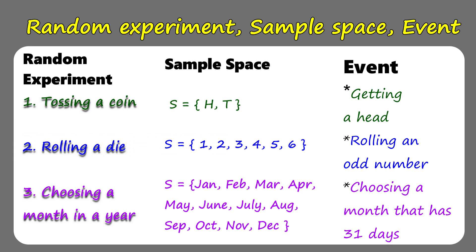Getting a tail is another event of that experiment. Number two is rolling a die. The sample space is 1, 2, 3, 4, 5, 6. An example of an event for this random experiment is rolling an odd number. You can also have rolling an even number, rolling a number greater than 3, or rolling a number less than 5. Those are different events of this experiment.